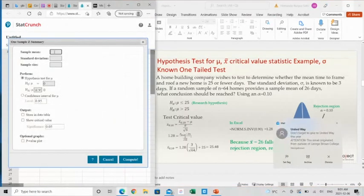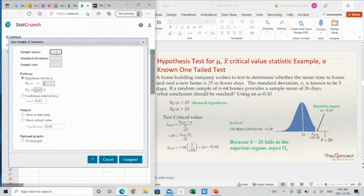The sample mean is, the sample mean was 26. The standard deviation was known, and it was 3. And the sample size, 64 homes, 64.